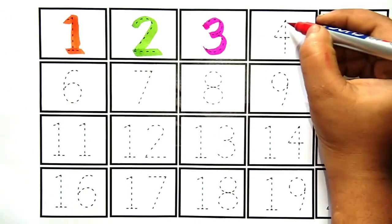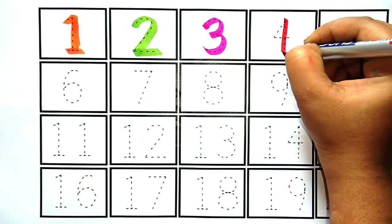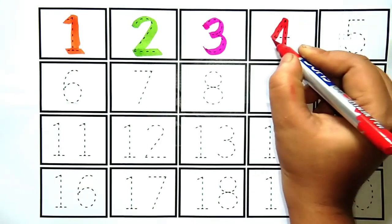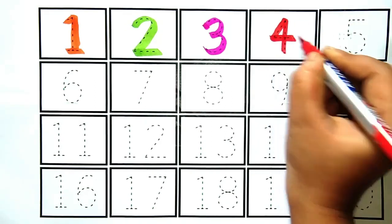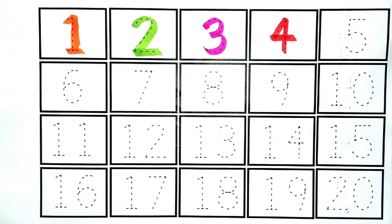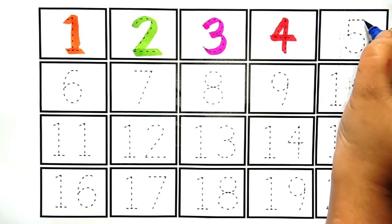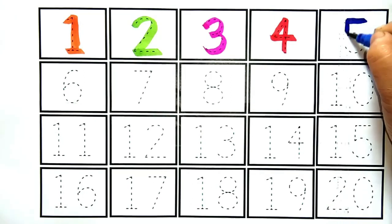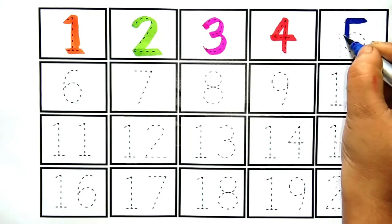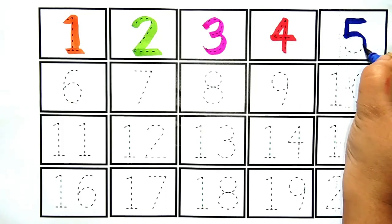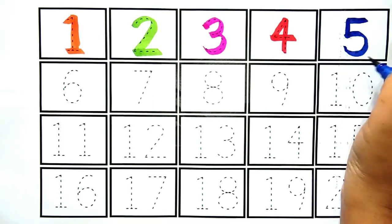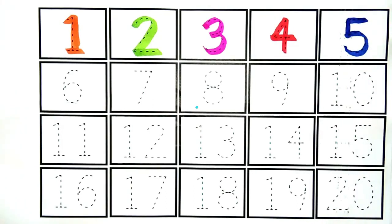Four. Yeh hai number four. Kya hai kids? Yeh hai number four. Five. Yeh hai number five.